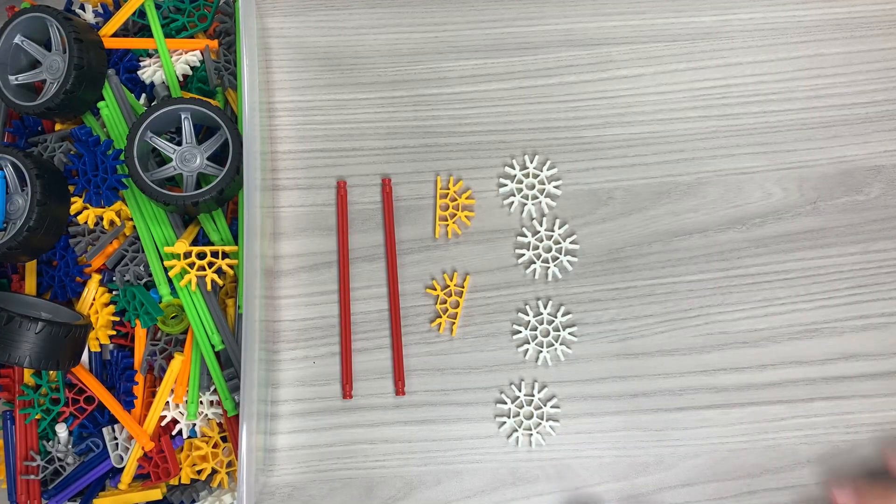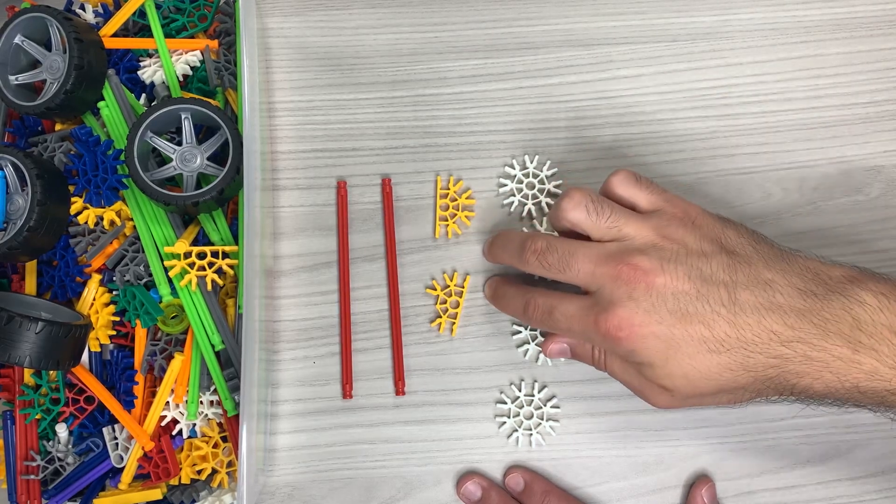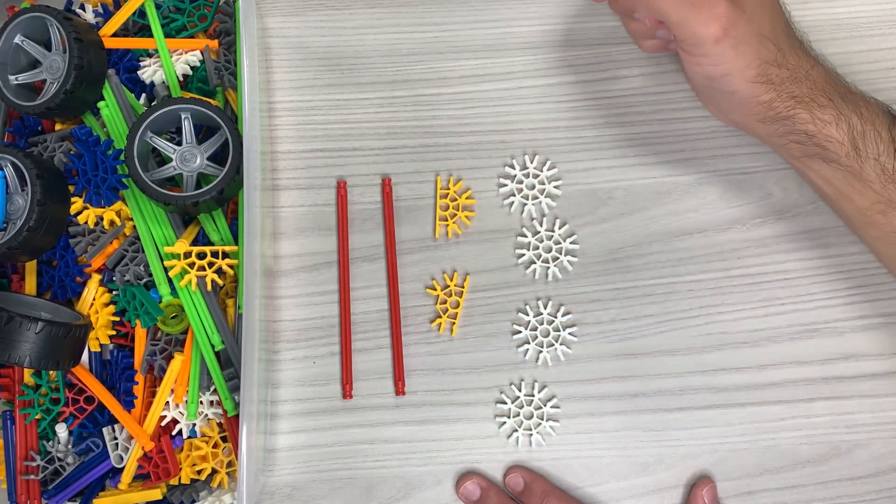All right guys so for the first step this is what we're going to need. Four of the white connectors, two yellow connectors, and two of the red rods.